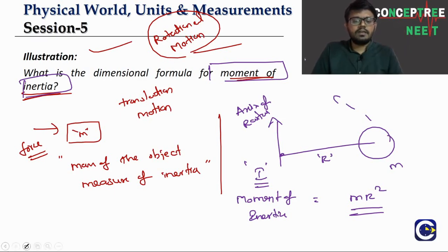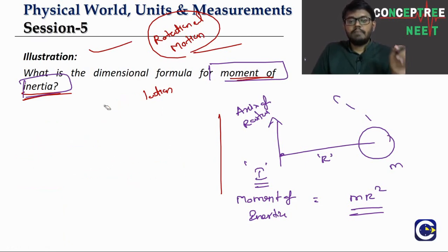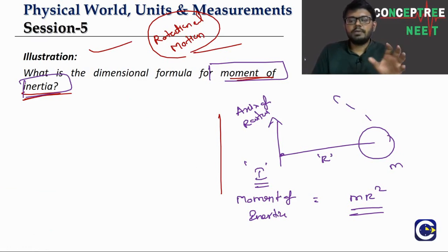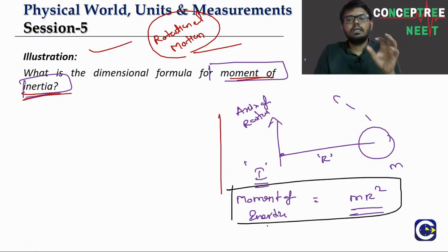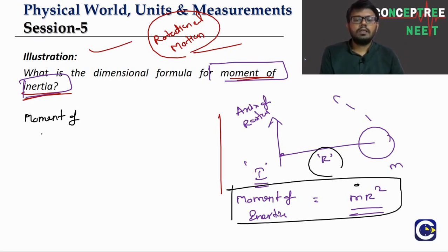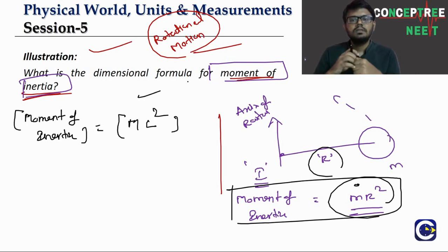We will learn about moment of inertia in detail in the rotational motion chapter, including parallel axis theorem and perpendicular axis theorem. Using the formula I = m r²: LHS is moment of inertia, RHS is mass × length². So the dimensional formula for moment of inertia is M L².